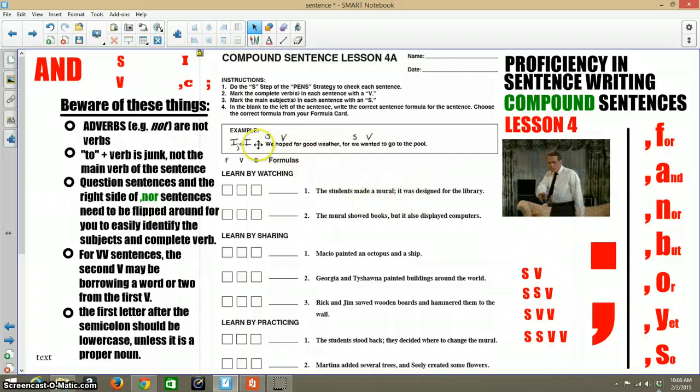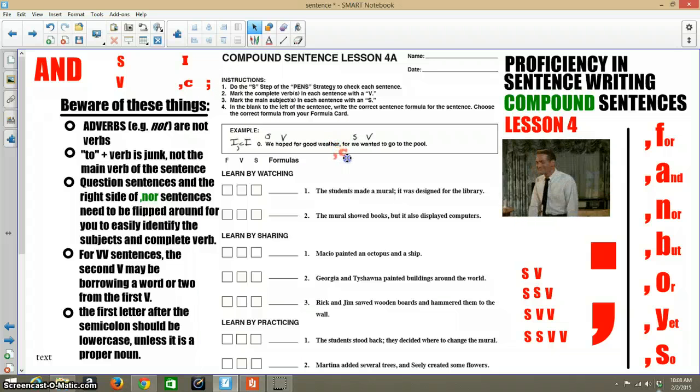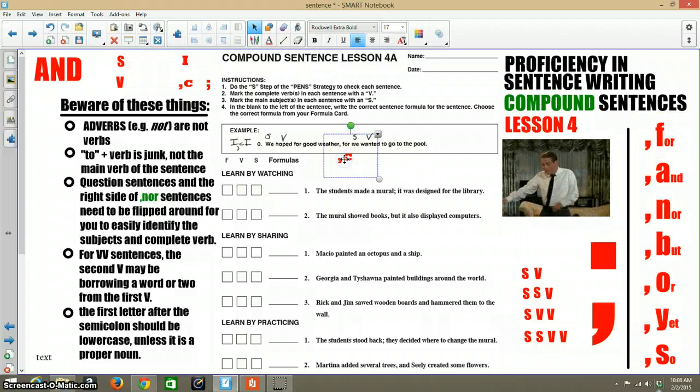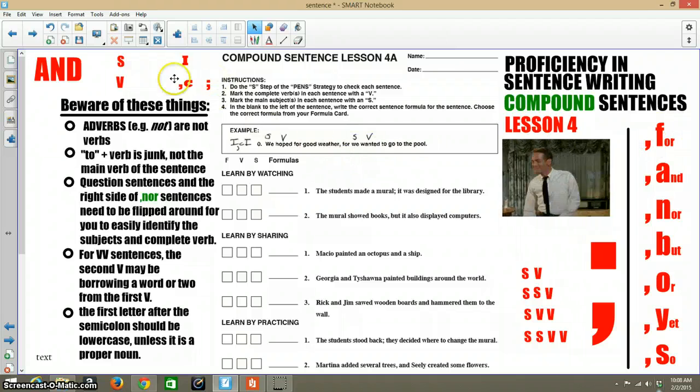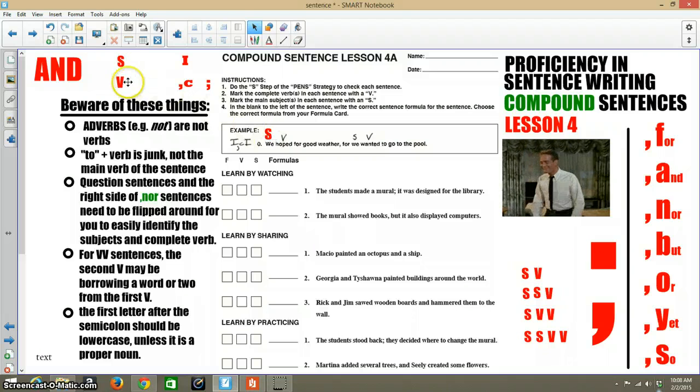So in the example sentence, you'll see that there is a comma fanboys, comma C, comma fanboys. It is comma 4, that's one of the fanboys you'll see with my mouse over here. So on that one, they identified to the left of that comma fanboys. The subject was we, the verb was hoped, and then for good weather is the junk.